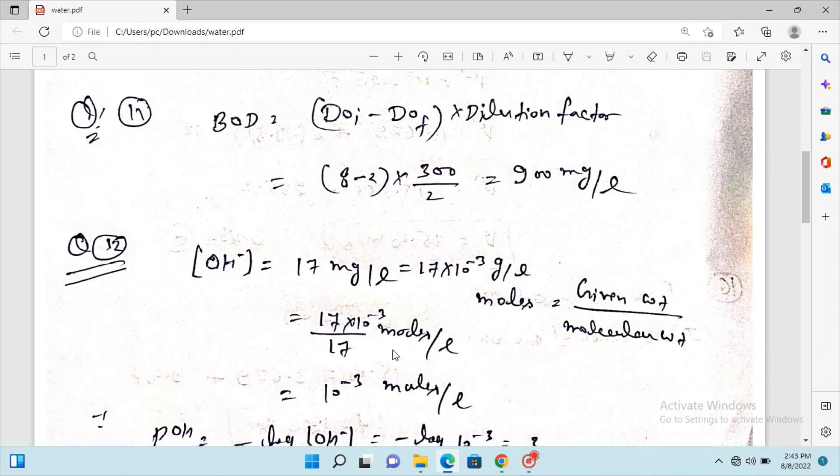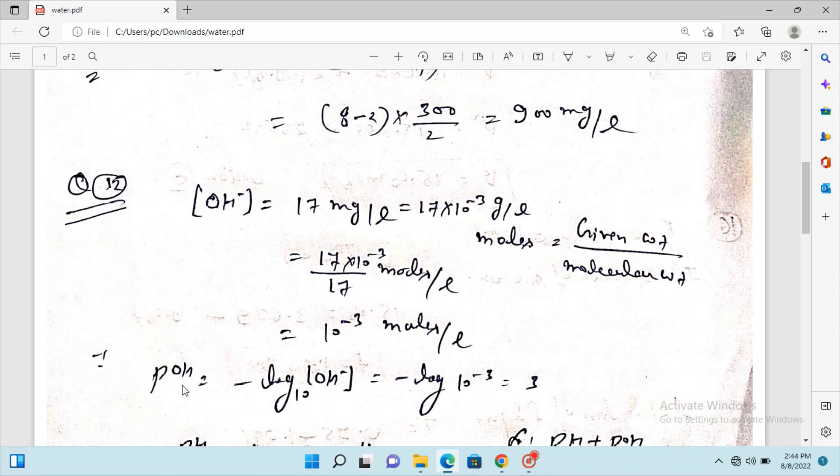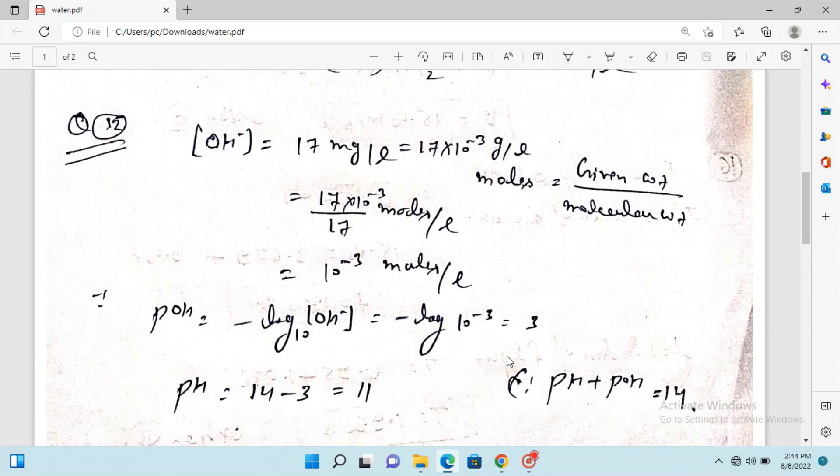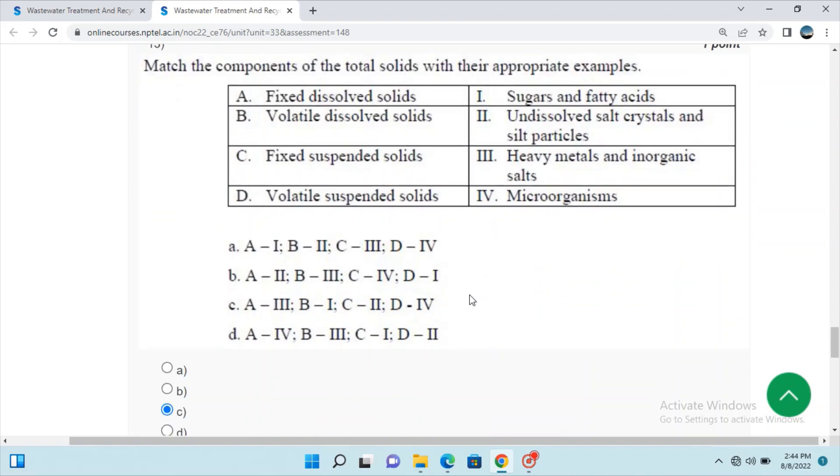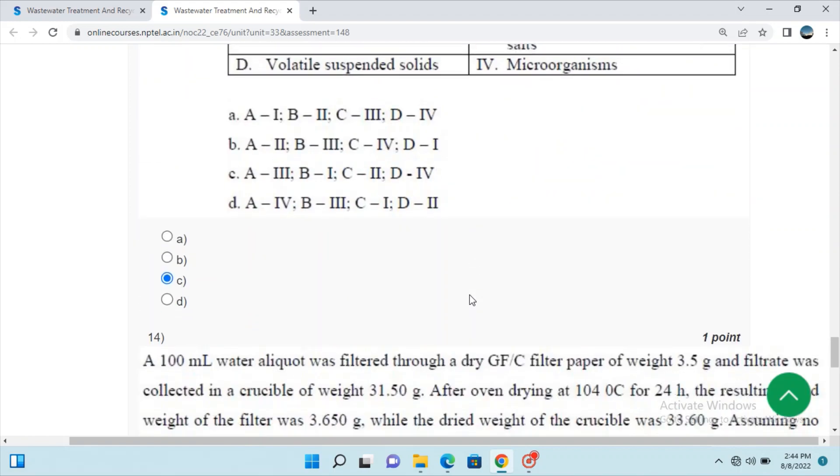The concentration of OH is 17 mg per liter. We know moles equals given weight per molecular weight, so we can calculate the concentration in moles per liter. We know that pOH equals minus log10 of OH concentration, and we can calculate the pH value from this formula. Question 13 answer is C.